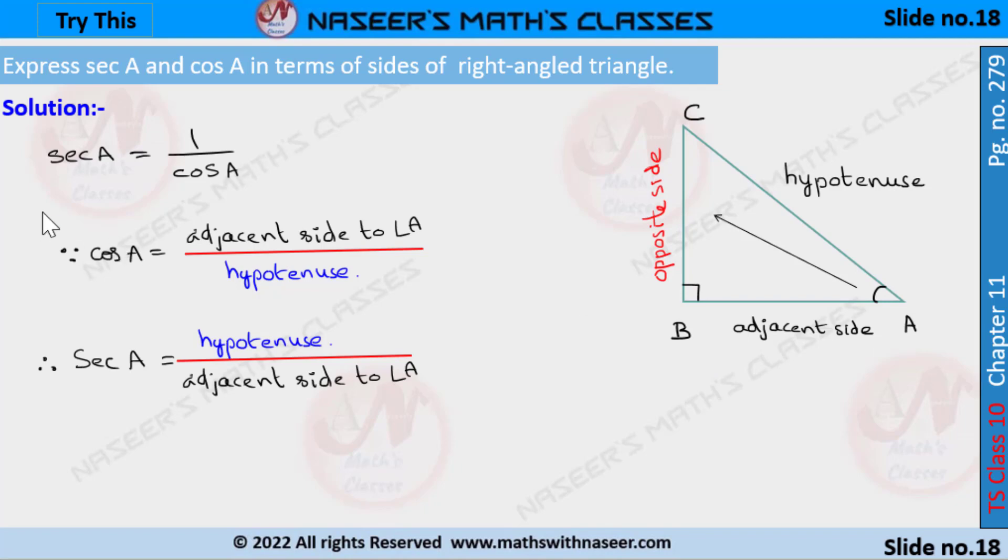sec A is the inverse ratio of cos A, then sec A is written as 1 over cos A. Cos A is defined as adjacent side to angle A over hypotenuse. Then its reciprocal, sec A, is written as hypotenuse over adjacent side to angle A.